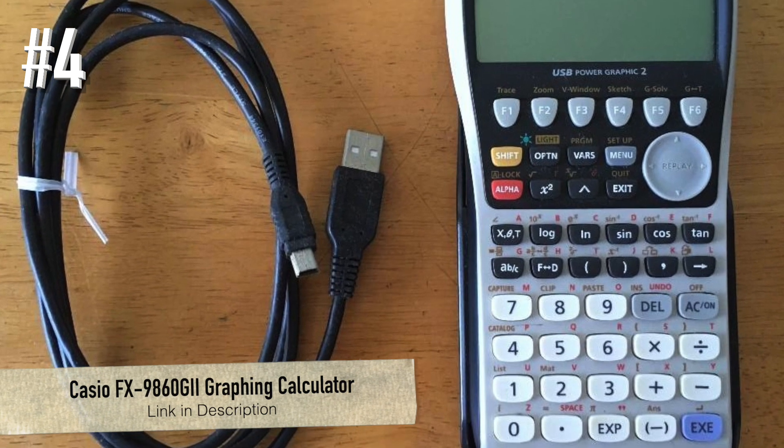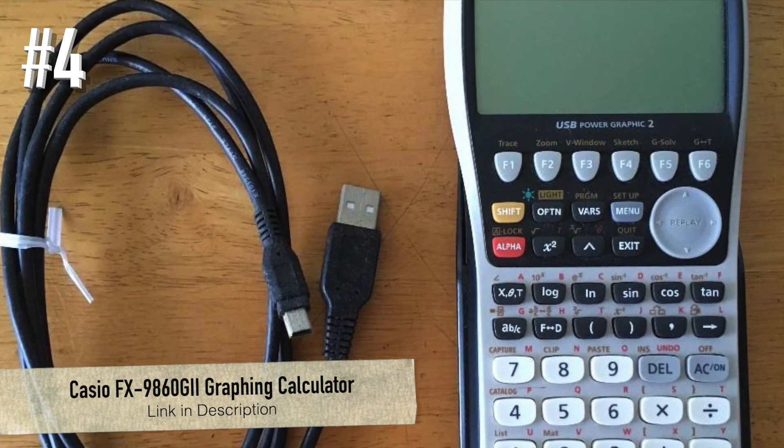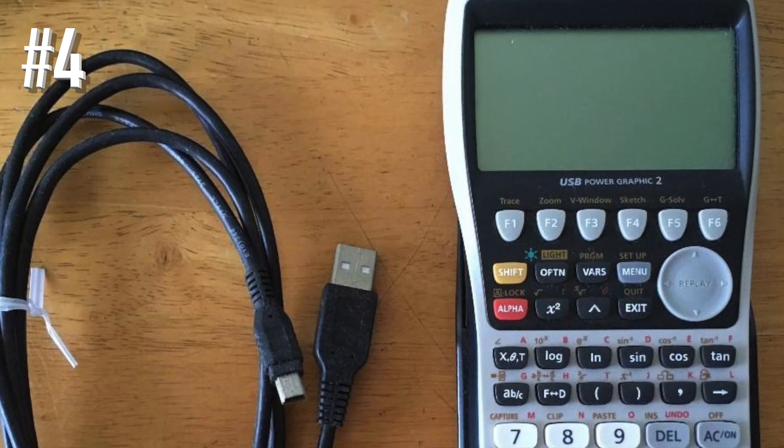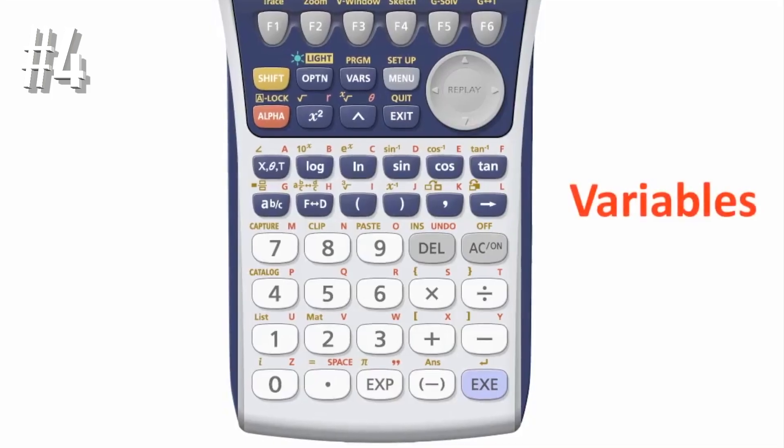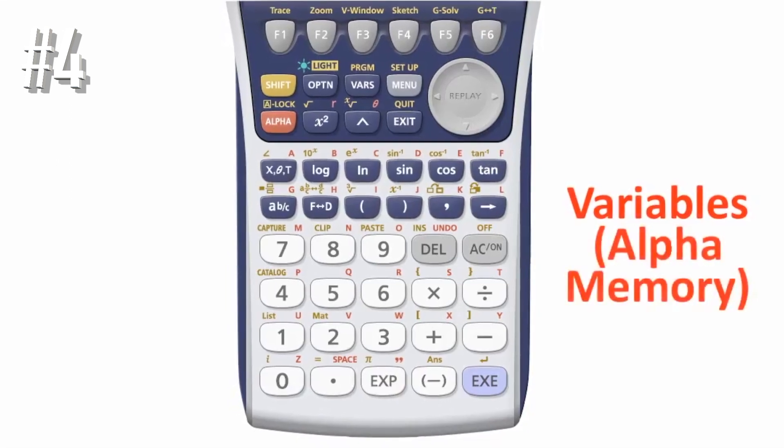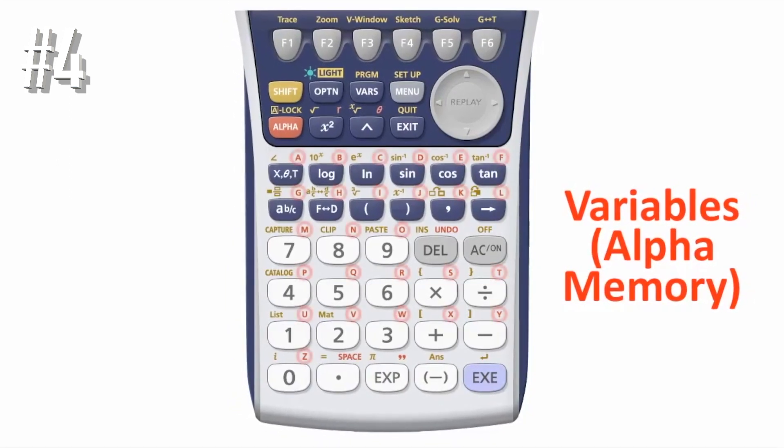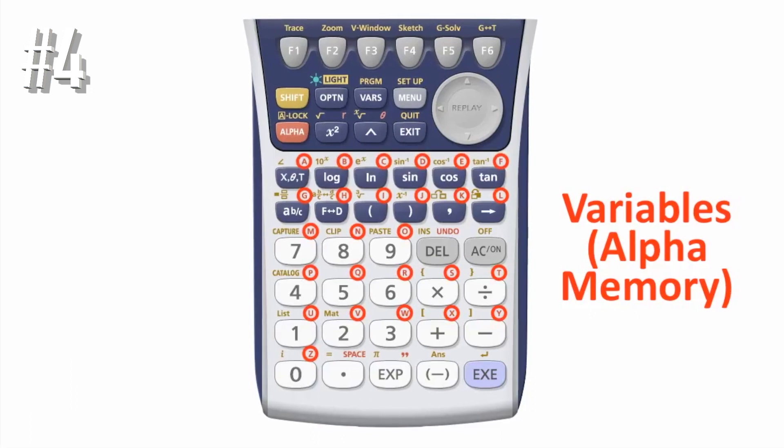Number 4. Casio FX 9860G2 Graphing Calculator. The Casio FX 9860G2 features an oversized high-resolution display, making it much easier to view the graphs and data displays on the calculator screen.